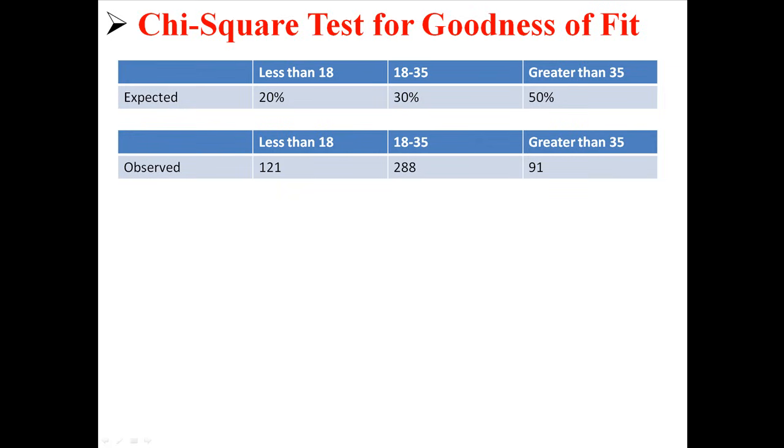So, we have our expected probabilities, and we have our actual observed values here. Based on these expected values, if we took a sample of 500, what would you expect the observed values to be? Well, if you expected 20% of those 500 people to be less than 18, you'd expect 100 to be less than 18. You'd expect 150 to be between 18 and 35, and you'd expect 250 to be greater than 35.